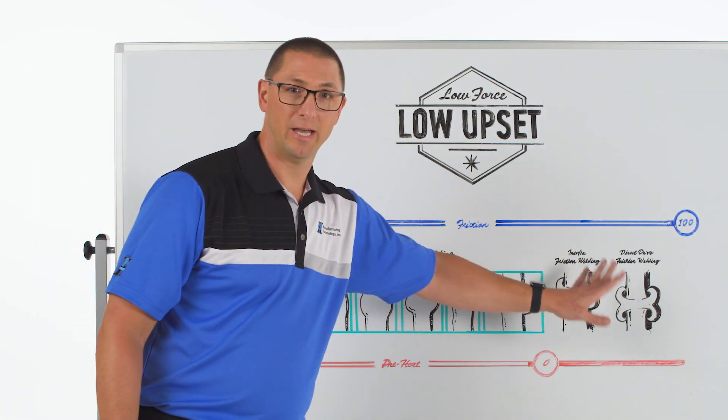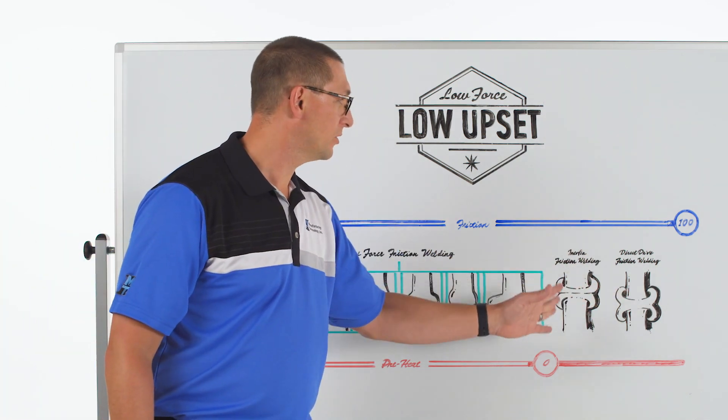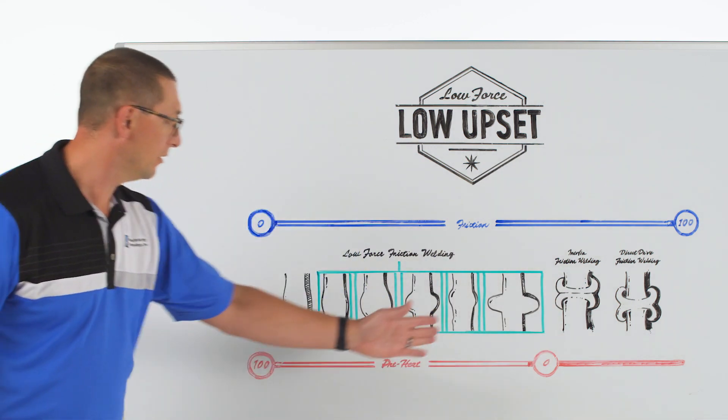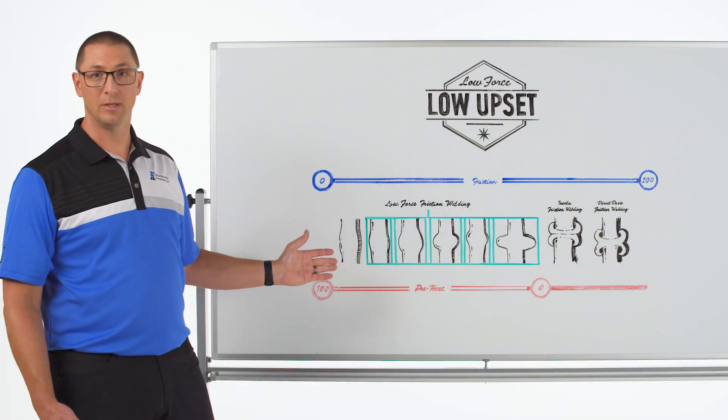On the far side of the continuum we have traditional friction welding which is all relative motion and force with no preheat, with low force friction welding being in the middle of this.